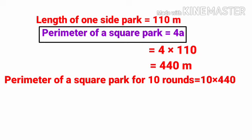Sanju goes 10 rounds, so perimeter of the square park for 10 rounds equals 10 into 440, equals 4400 meter. Since 1000 meter equals 1 kilometer, the answer is 4.4 kilometers. The distance covered by Sanju is 4.4 kilometers.